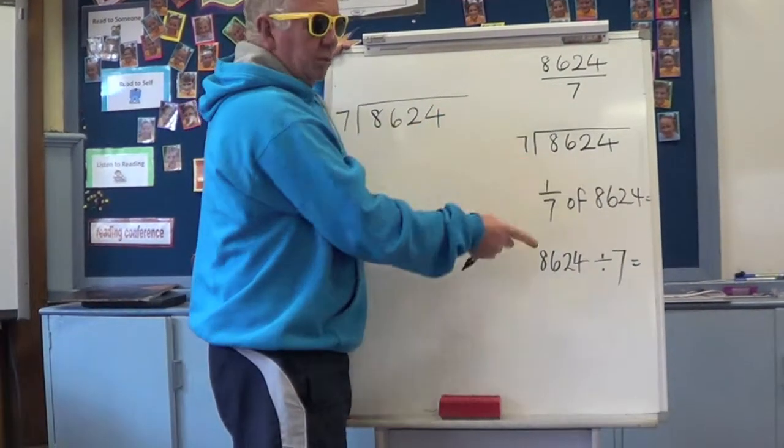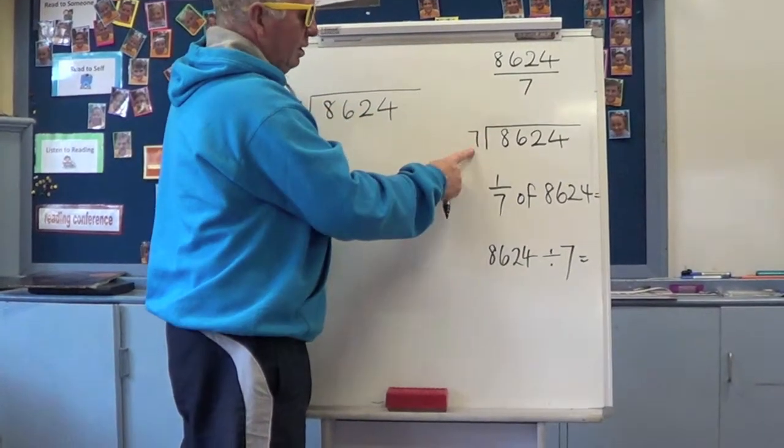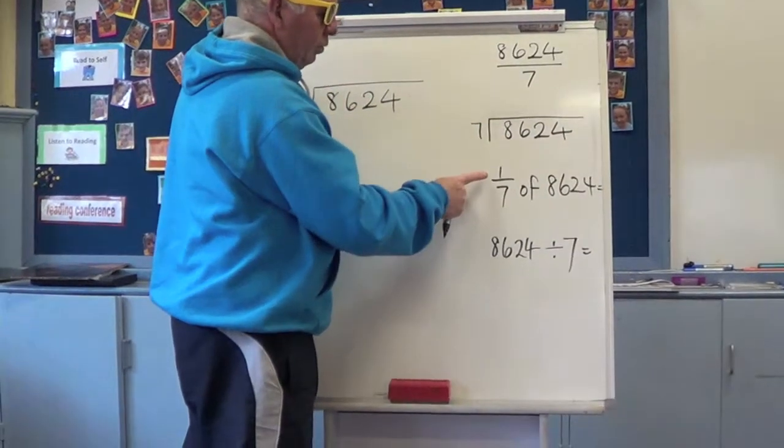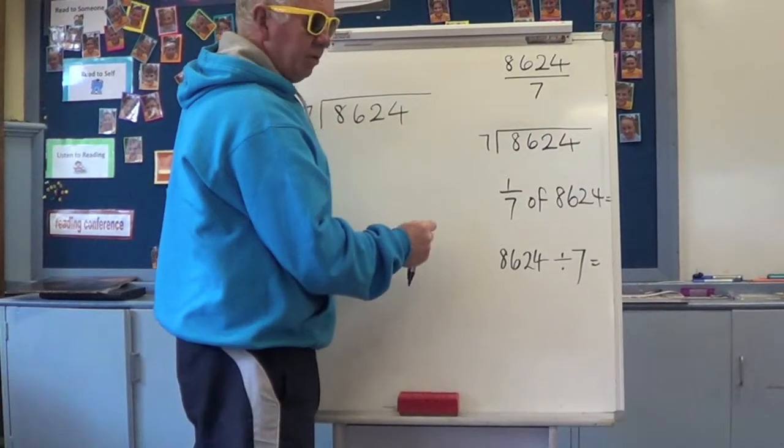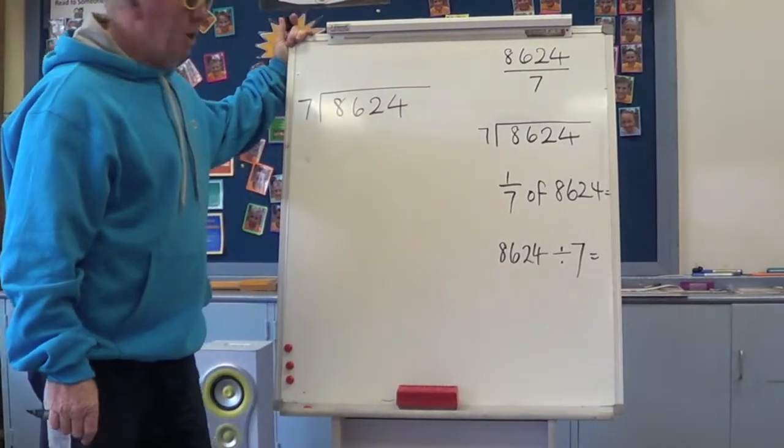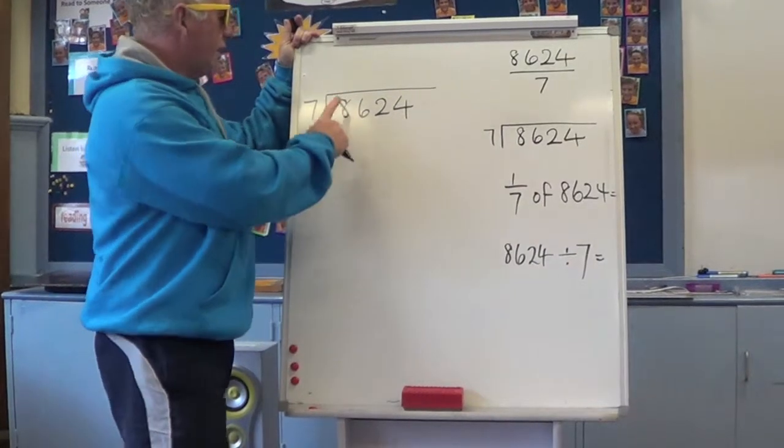Now you can see the problem looking like this: 8,624 divided by 7. Seven set up like that into 8,624. Or just looking like that, normal division, short problem. The formal setting out according to Booker is vertical.